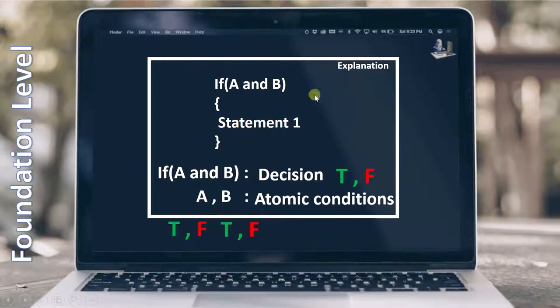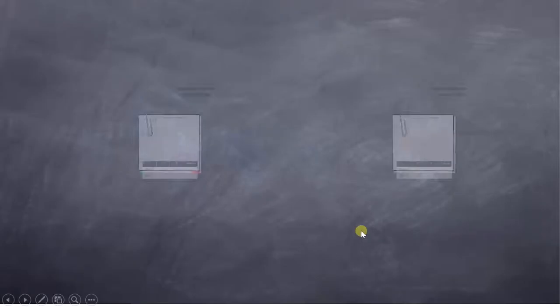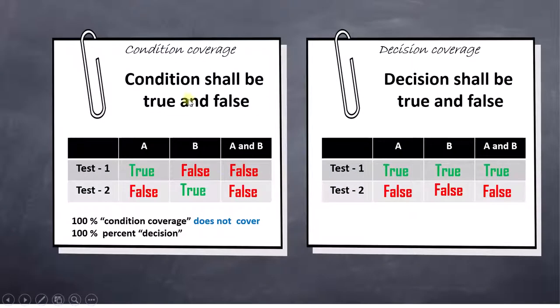In order to understand this topic, we had two examples. For condition coverage, we say that condition shall be true and false, whereas for decision coverage, the decision has to be true and false. And for that we had these two tables.